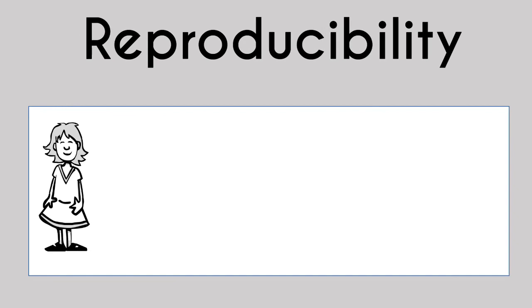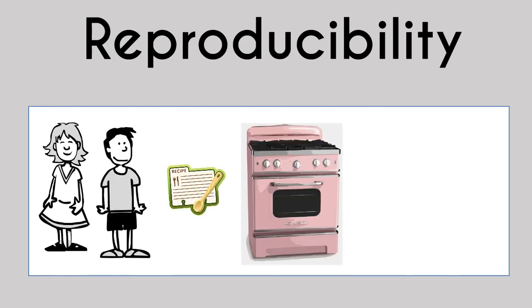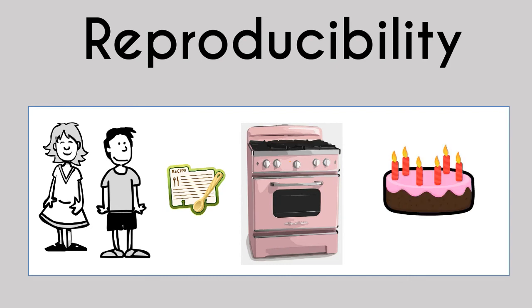Reproducibility means that my little brother could also follow the recipe using my oven and required oven temperature and produce the same or just about the exact same cake that I make. Again, I am oversimplifying these concepts, but you get the idea.